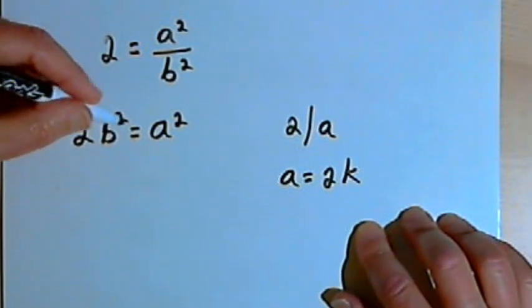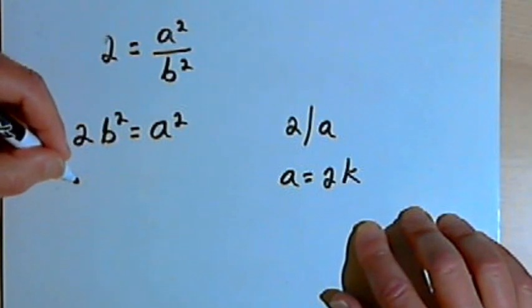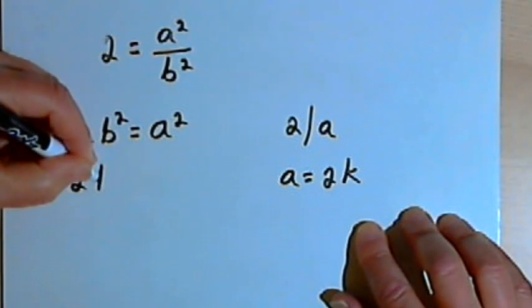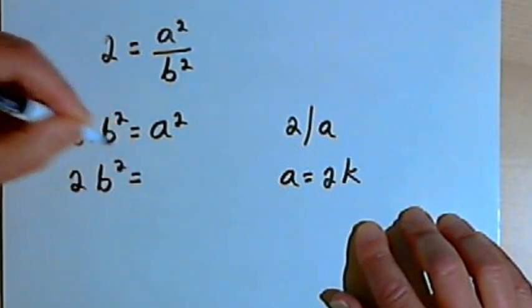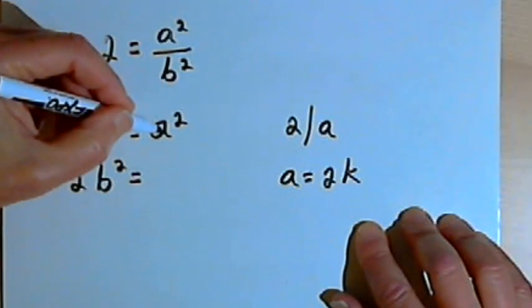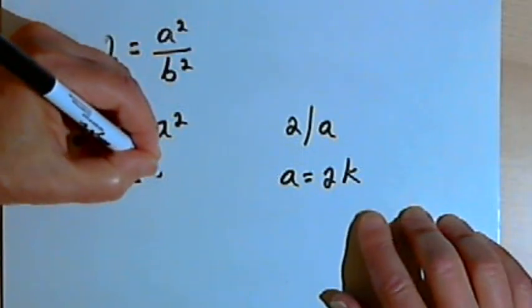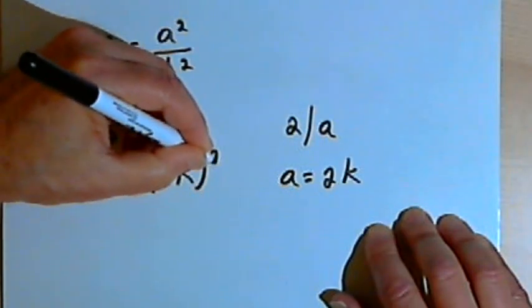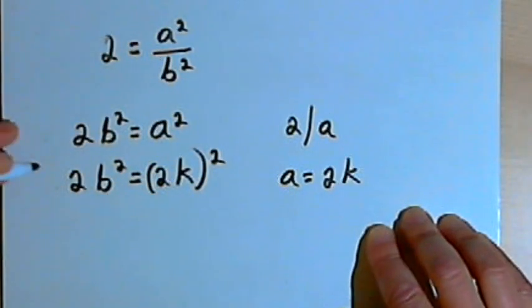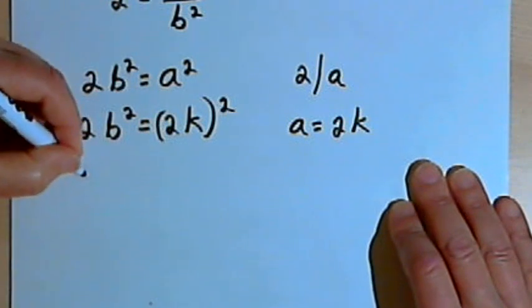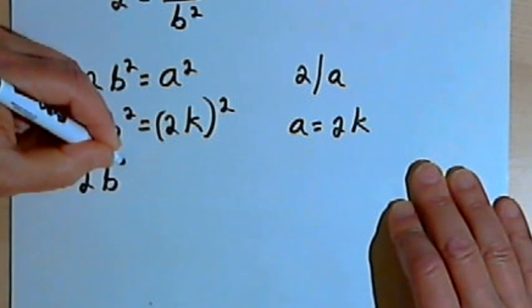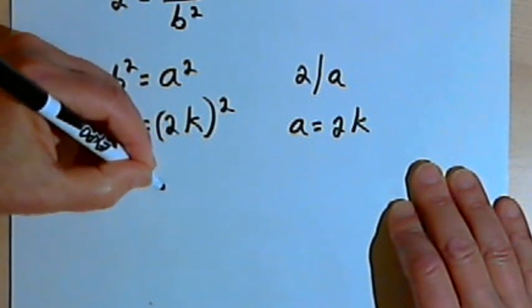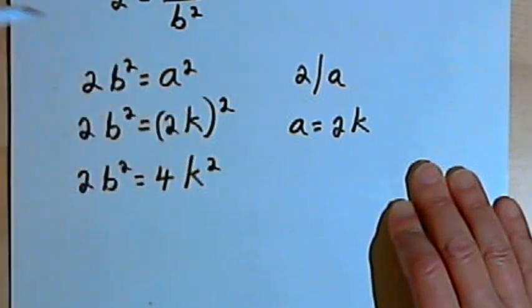Now I'm going to go back to this 2b squared equals a squared and I'm going to rewrite that. I'm going to have 2b squared, and instead of a squared, I'm going to replace the a with 2k. So I'm going to have 2k in parentheses and I'll square that. When I do the squaring, I get 2b squared equals 4k squared.